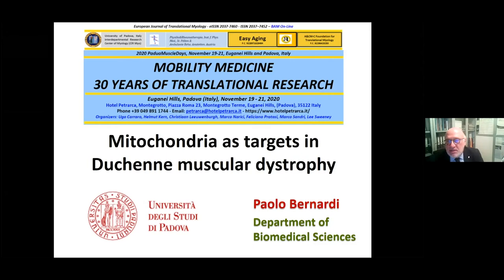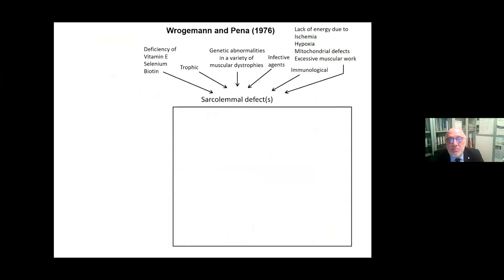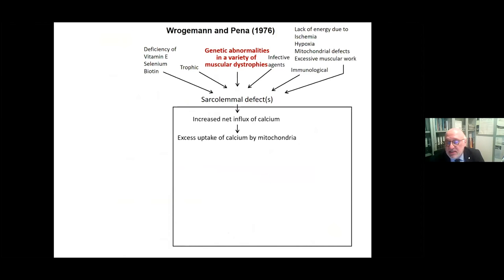My talk is about mitochondria and Duchenne muscular dystrophy. Calcium is important in muscle pathophysiology, and the idea that mitochondrial calcium overload could be a factor in cell necrosis and muscle diseases goes back to Klaus Krogman in the first issue of The Lancet, 1976. Many things can converge — defects cause an increase in net influx of calcium, initially compensated by mitochondrial calcium uptake. Too much calcium then induces functional damage, later followed by structural damage.